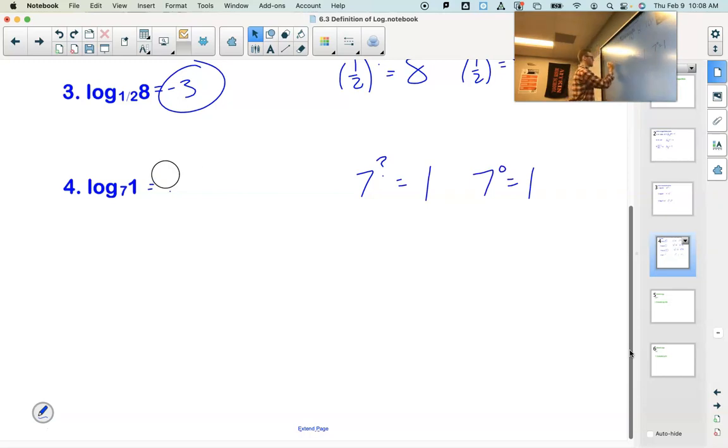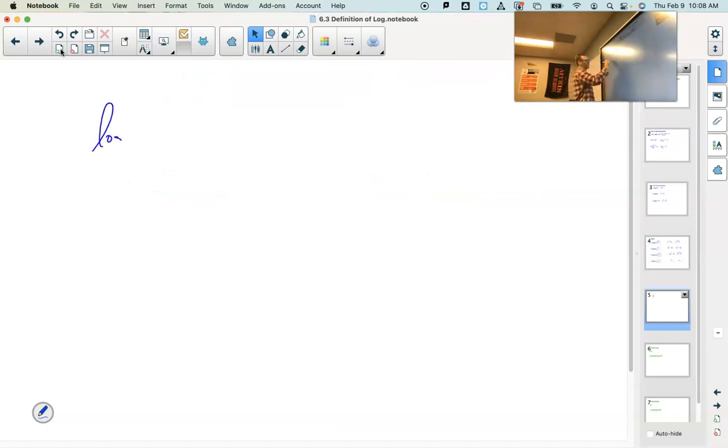Log base 7 of 1. Question I ask, 7 to the what power is 1? Well, I know 7 to the 0 is 1. So this is equal to 0. Sound good?